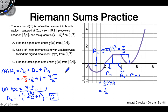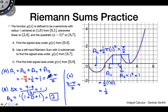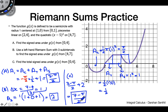For part c, we find the total signed area under g(x) from 0 to 7 by adding parts a and b: (3 − π)/2 + 2 = (3 − π)/2 + 4/2 = (7 − π)/2. That is the total signed area under this piecewise curve from 0 to 7.